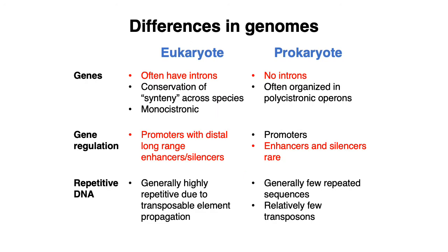Eukaryotic genes oftentimes have introns, especially in higher organisms like humans and other mammals. Gene order tends to be conserved across species, and importantly for this class, genes are monocistronic — meaning genes are typically transcribed individually. This contrasts with prokaryotic genomes, where genes generally don't have introns and multiple consecutive genes can get transcribed together, organized into polycistronic operons. Eukaryotic genes also have promoters and distal long-range enhancers that can complicate gene regulation.